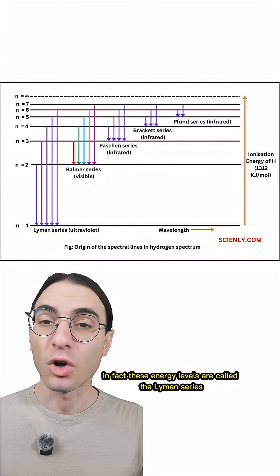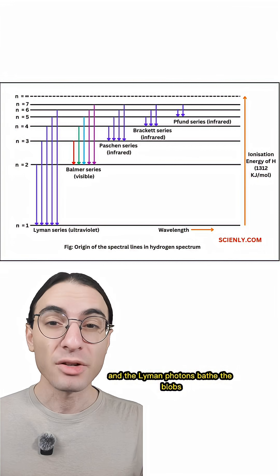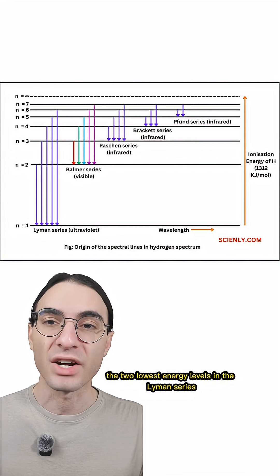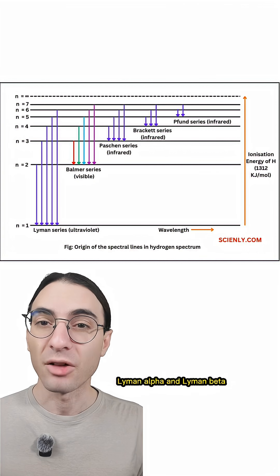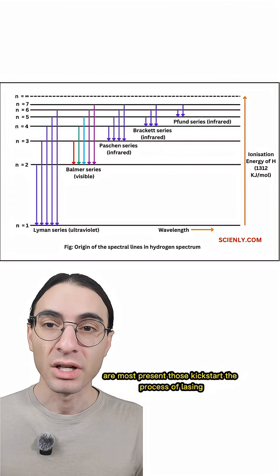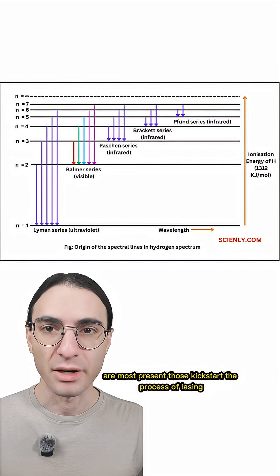These energy levels are called the Lyman series, and the Lyman photons bathe the blobs. In particular, the two lowest energy levels in the Lyman series, Lyman alpha and Lyman beta, are most present. Those kickstart the process of lasing.